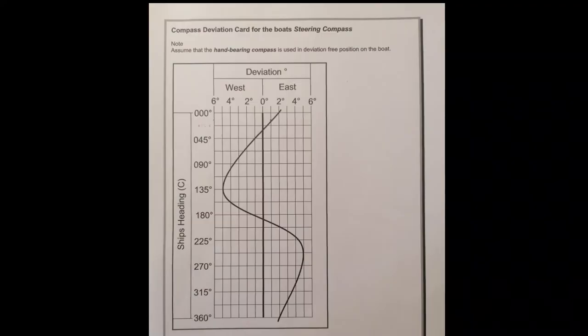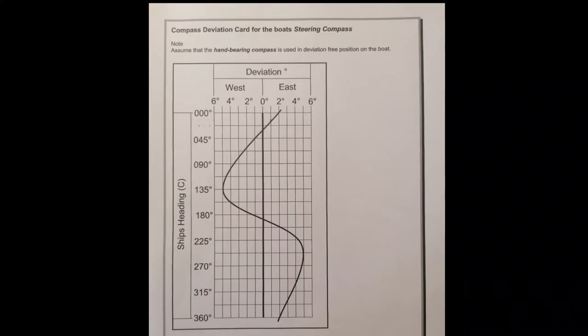For our lessons, we're given a compass deviation card. Most big boats have these, and they're made by rotating a boat through 360 degrees. They would use another compass. There is a compass called a gyro compass, or else another compass that isn't greatly affected, maybe in a different position on the boat.